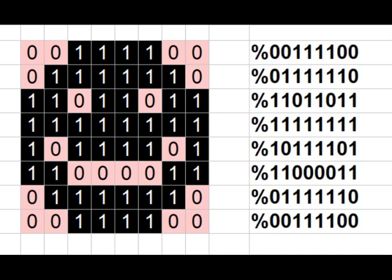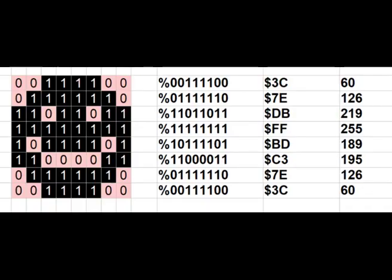I've added the percentage prefix, which tells our assembler we're using binary. I've also converted them into both hex and decimal so you can see how that works. These 8 numbers represent the 8 values we need to draw this face onto the screen, so we're going to have to put these 8 numbers into screen memory in the right place, and hopefully that will give us a face on screen.